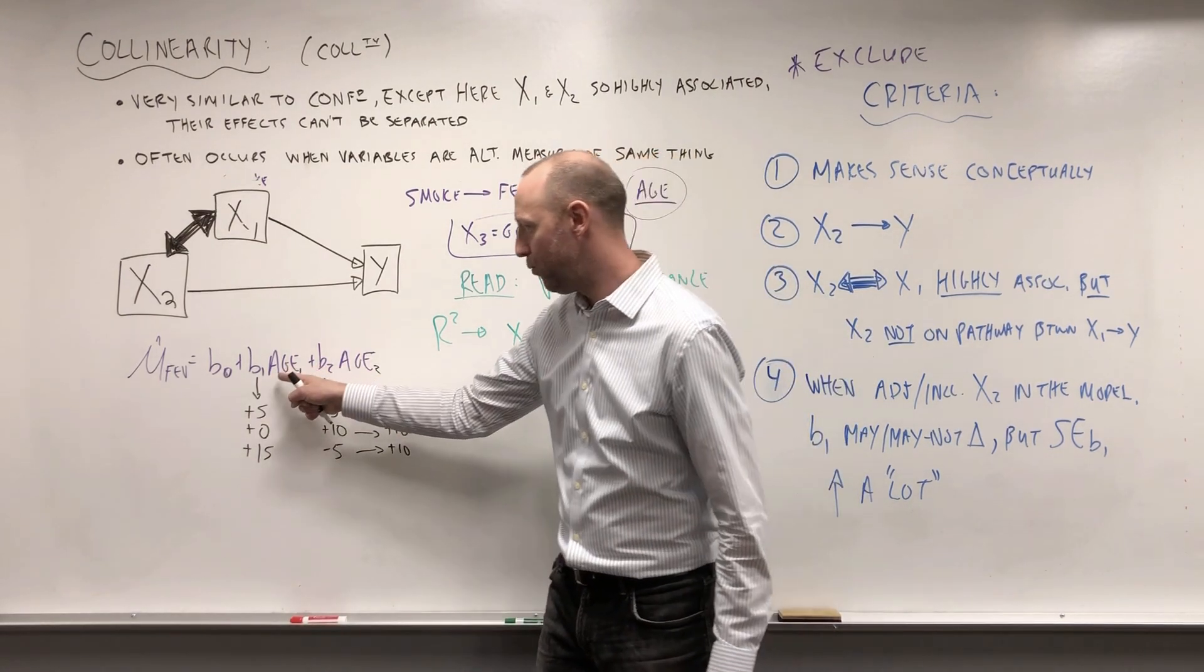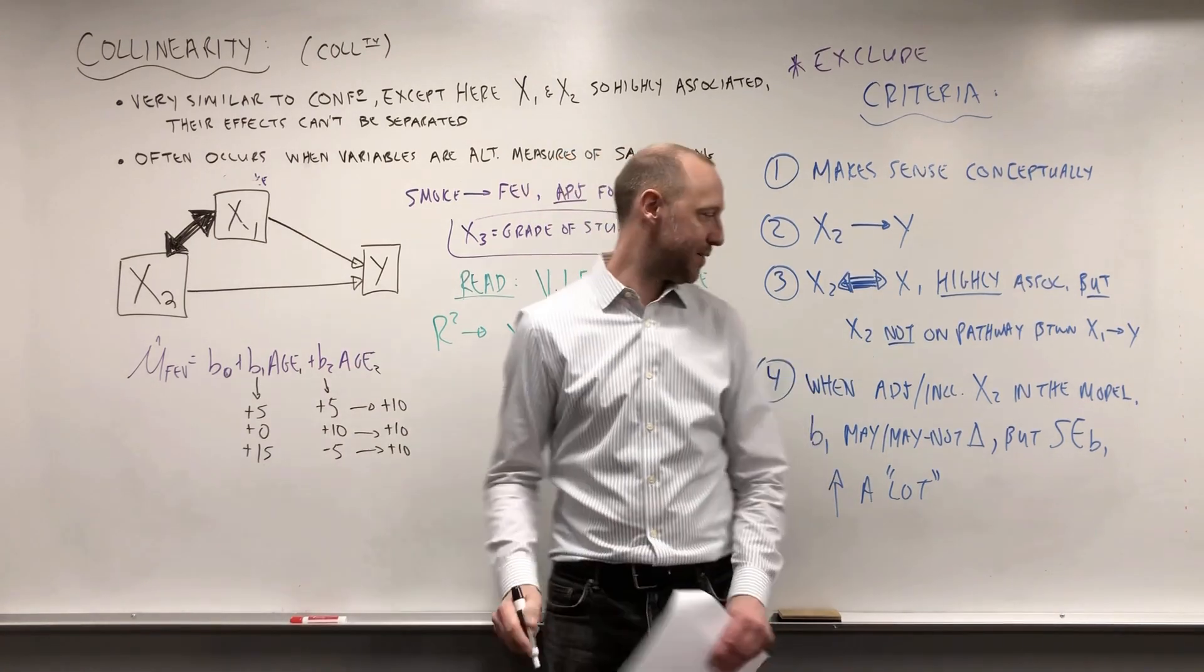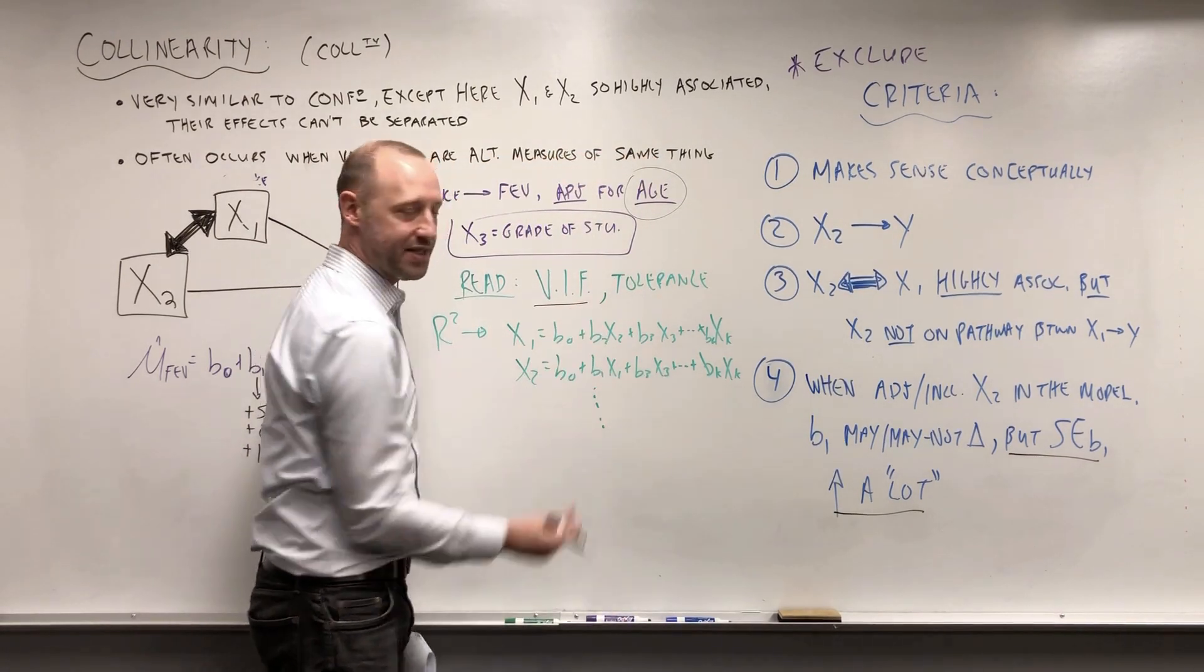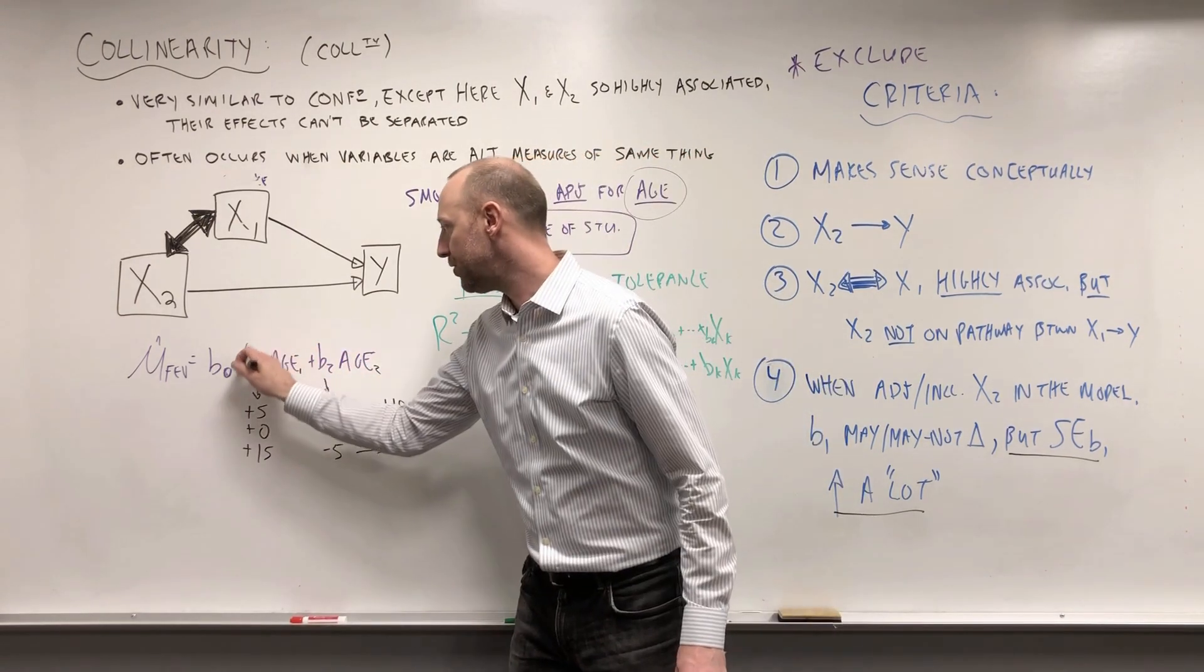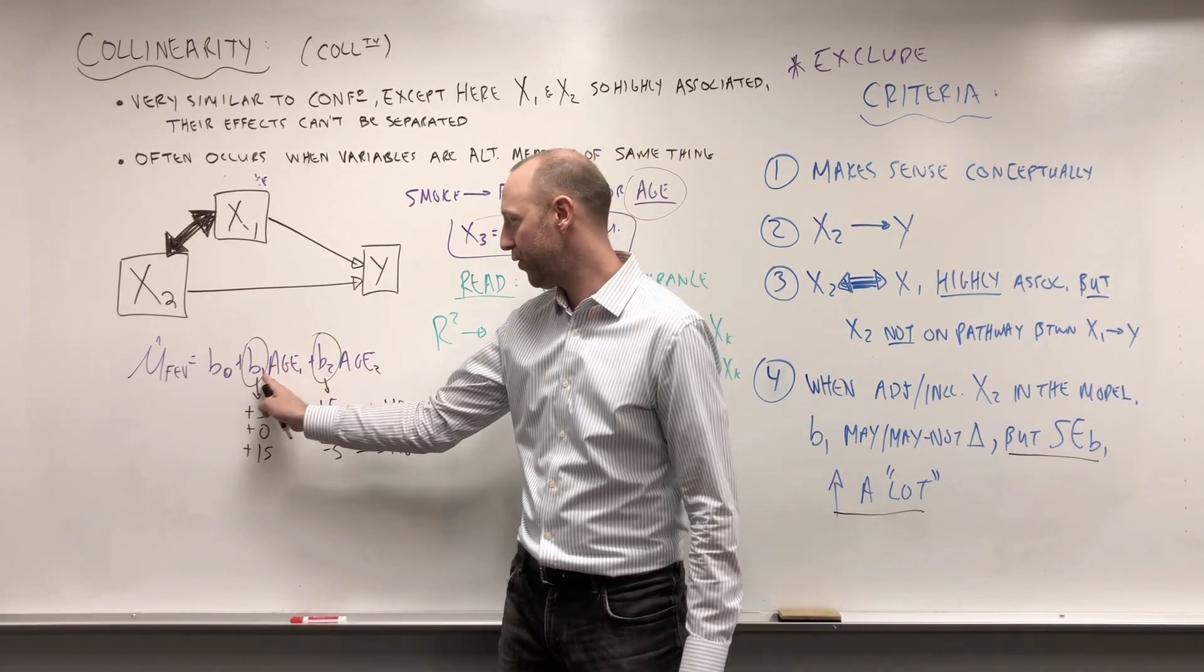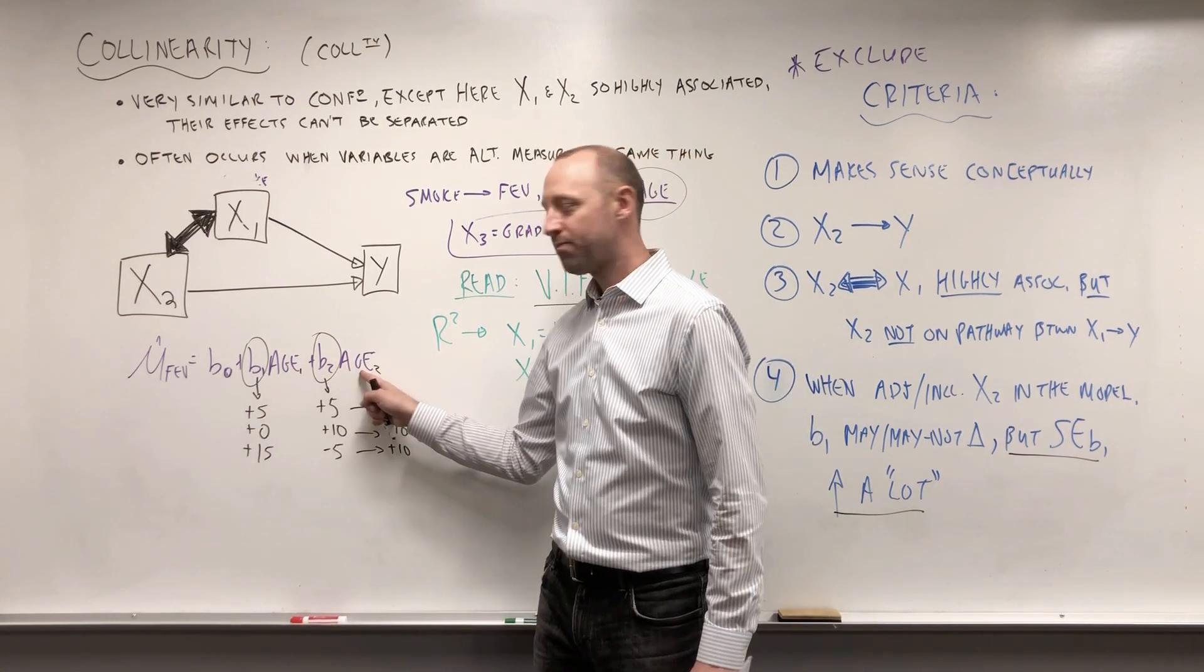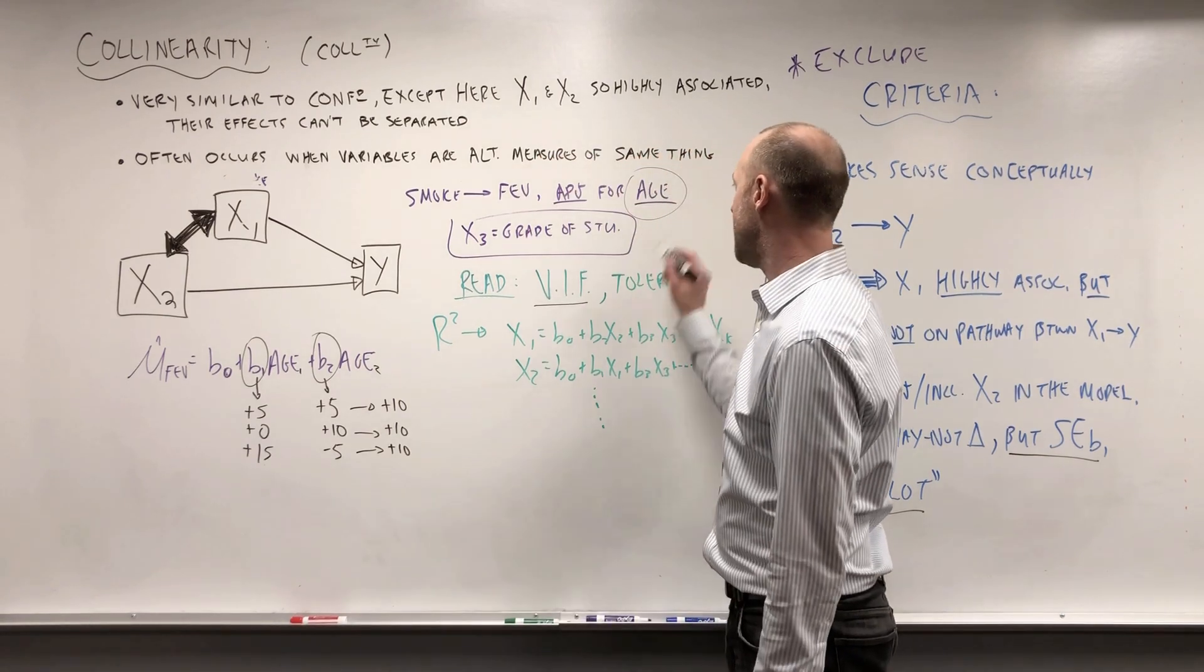Where the weighting ends up can be sort of random. That's part of why we're going to see the standard errors increase a lot, or this variance inflate. See, the uncertainty in these coefficients is going to shoot up a lot because we're not sure—should most of the weight go here or should most of it go here? It's sort of random where it ends up if these two variables are sharing the same effect or capturing the same info.